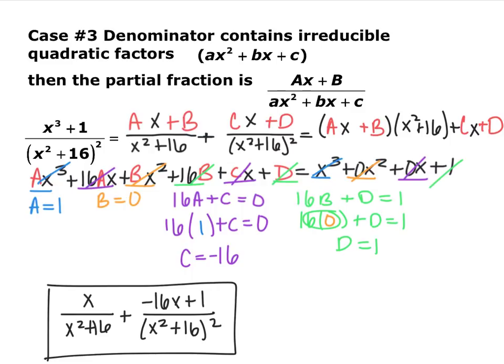When you have non-reducible quadratics that can't be factored, their numerators are linear — ax plus b. And if you have repeated irreducible quadratics, you include every term up to whatever exponent is present.